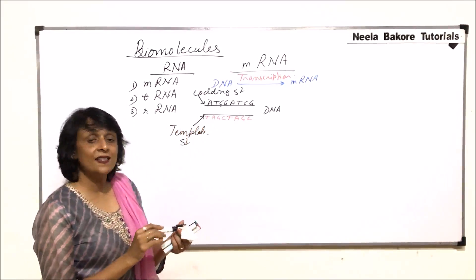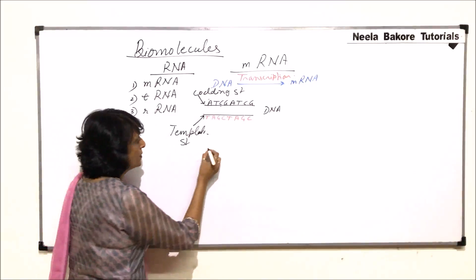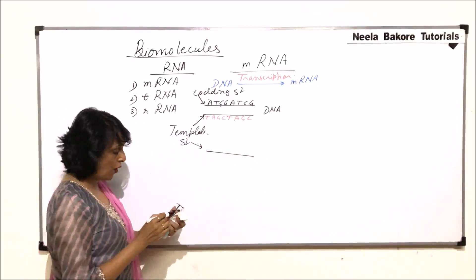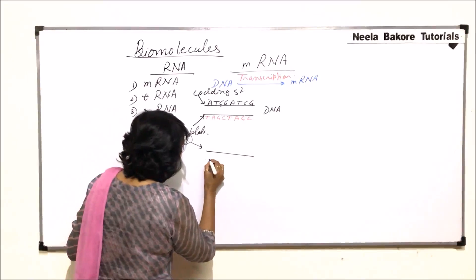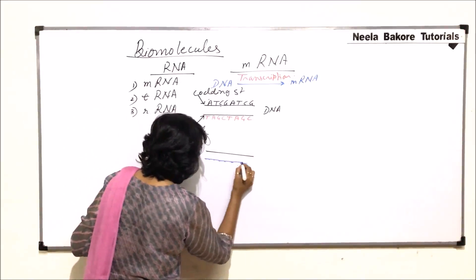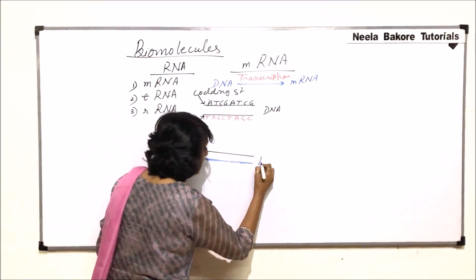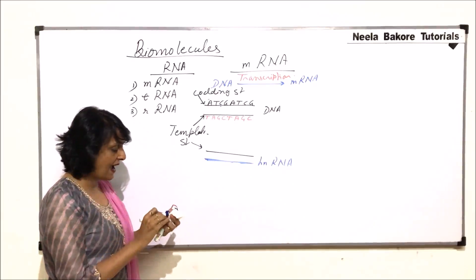So mRNA synthesis takes place on a template strand. Now say this is our template strand that we are talking of. And we are synthesizing mRNA. So what we get here is mRNA which is synthesized. But here we are going to call it HnRNA. H-N-RNA. Heteronuclear RNA.